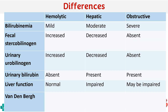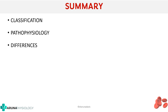In the comparison table for Van den Bergh test results: hemolytic jaundice gives an indirect reaction because only unconjugated bilirubin is in the blood; hepatic jaundice gives a biphasic reaction because both conjugated and unconjugated bilirubin are present; and obstructive jaundice gives a direct reaction. This video has covered the classification of jaundice, its brief pathophysiology, and the differences between the three types of jaundice.